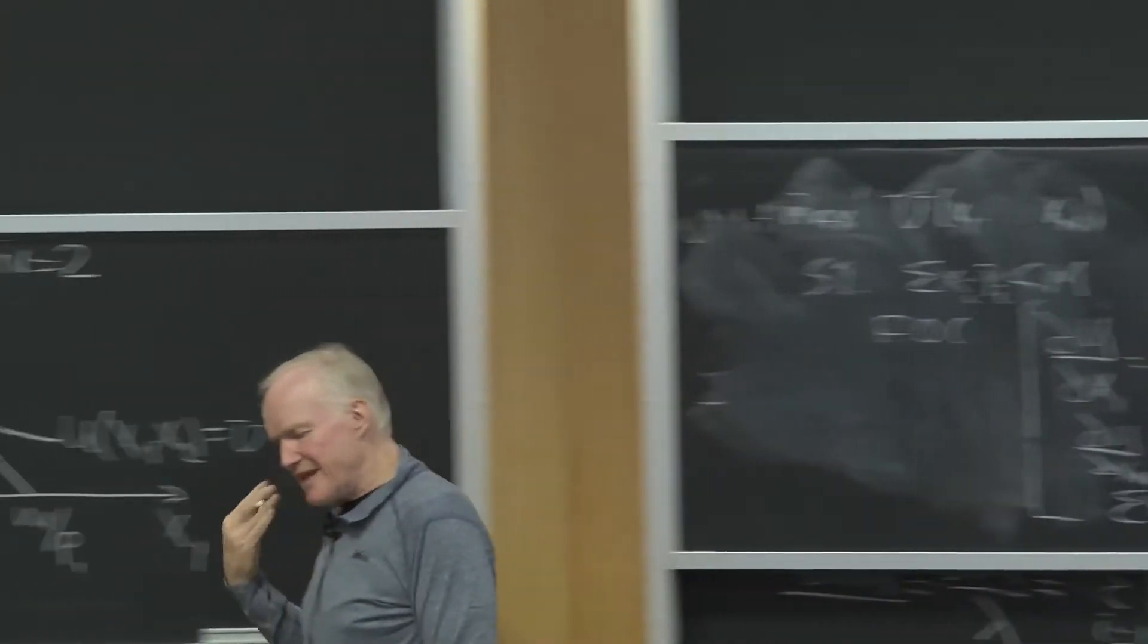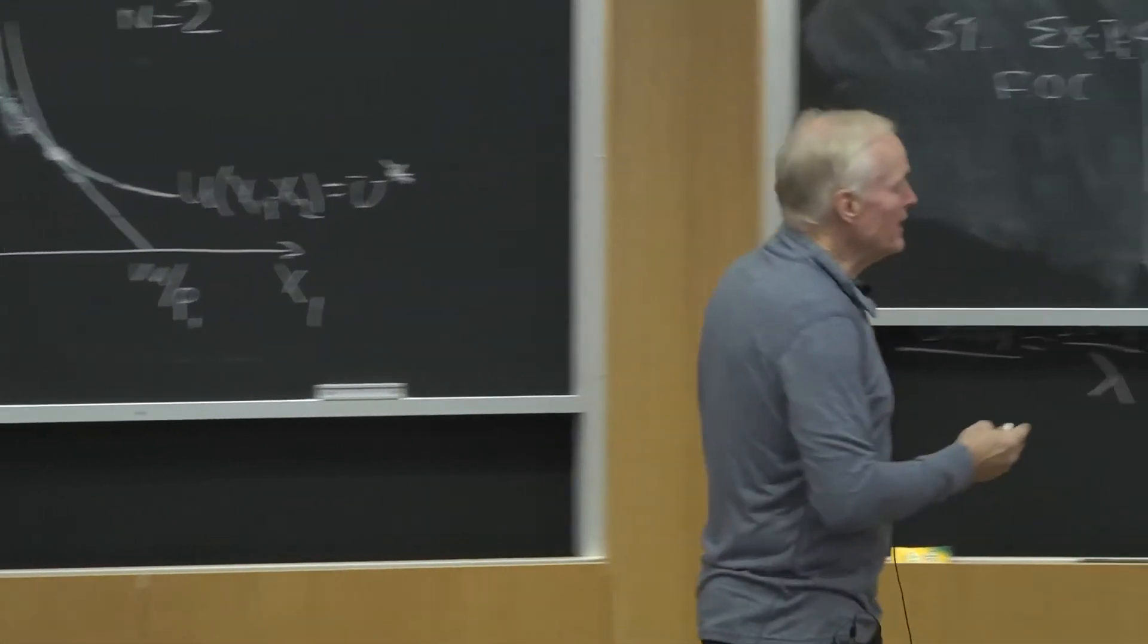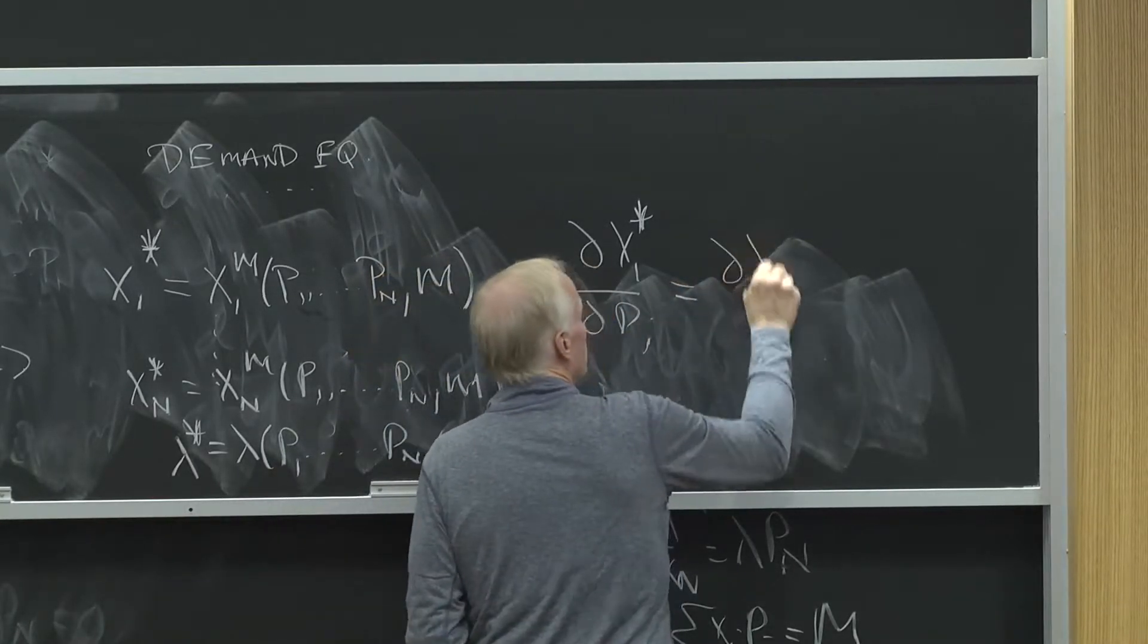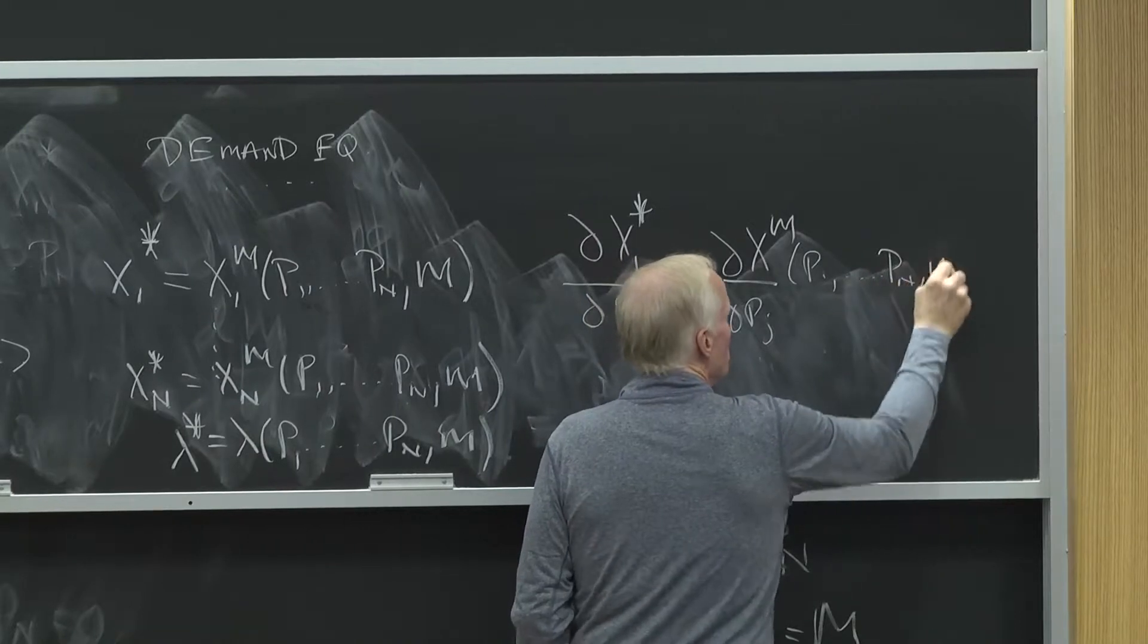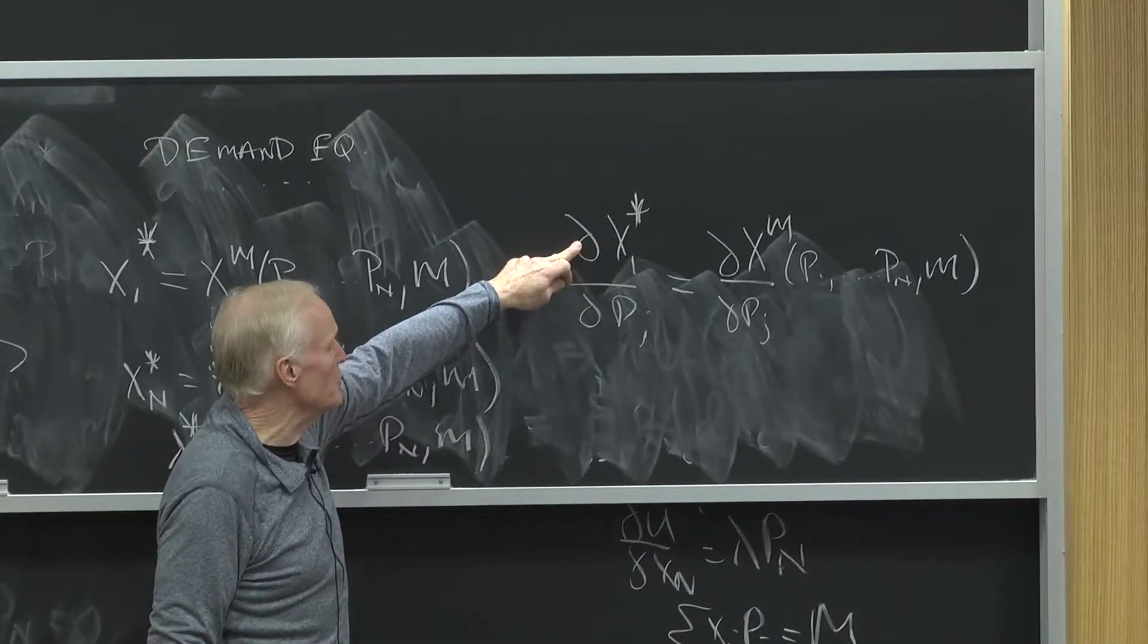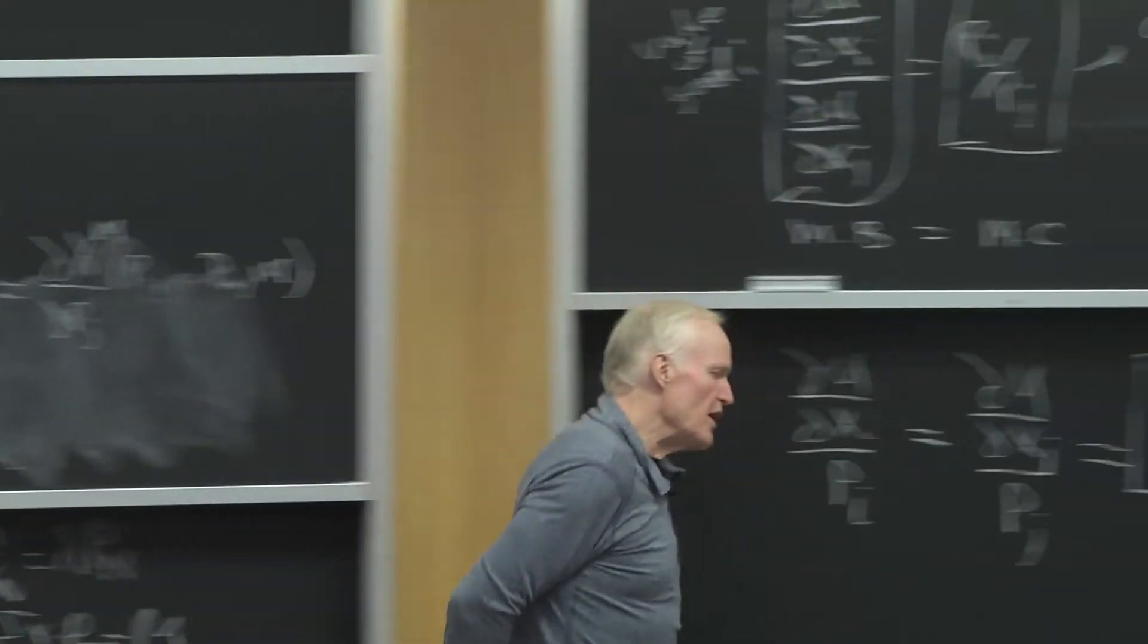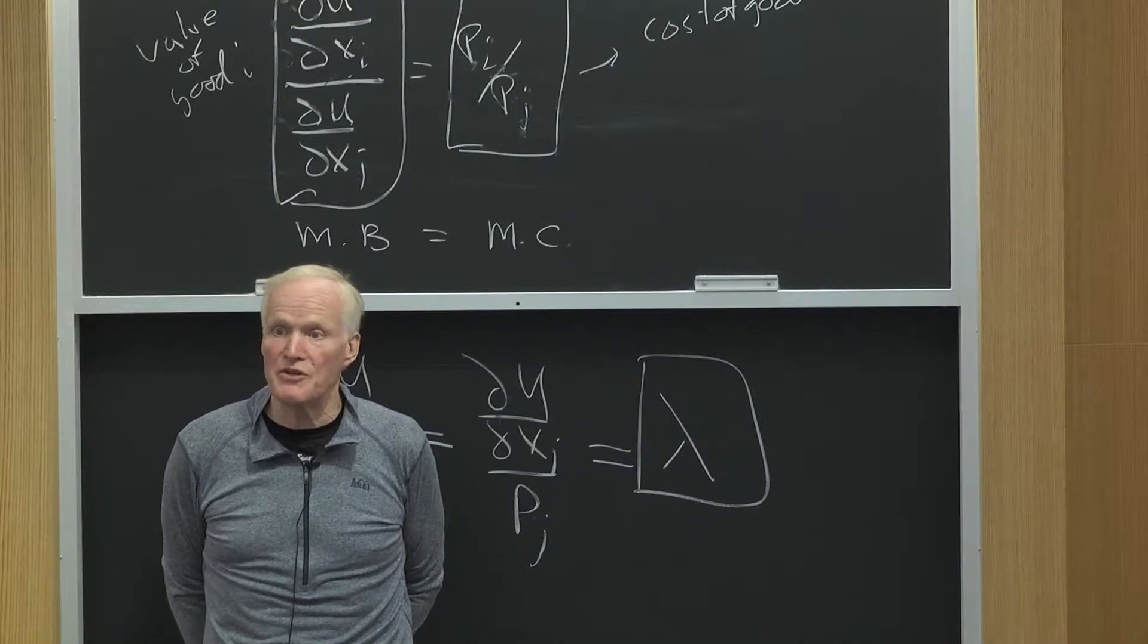Now it's important to understand what's going on in these demand equations. For example, from the Marshallian equations, partial x1*/partial pj equals partial xm/partial pj from p1 to pn. This tells me, as I change the price of good j, what will happen to the equilibrium consumption of good 1. That's measured by the partial derivative of this Marshallian demand equation. Now, what am I assuming about all the other goods in the Marshallian system? Am I holding the consumption of those other goods constant?